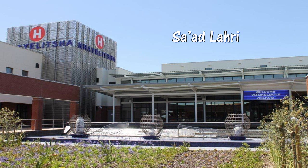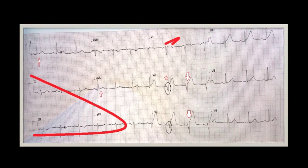Let's go through the ECG. If you have a look at lead 1 and AVL, you will notice that there is a current of injury. You can see here there is a high lateral myocardial infarction.